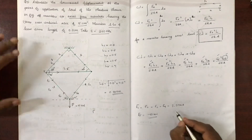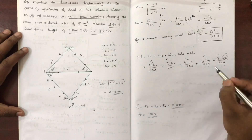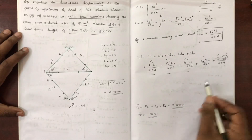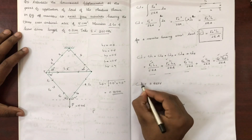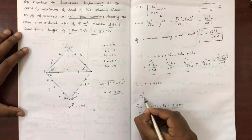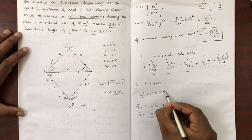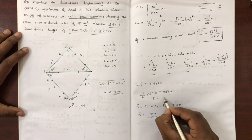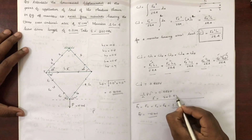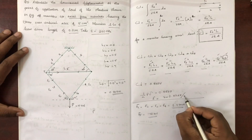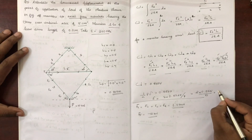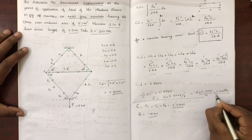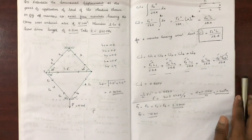F5 is minus 10 kN. Substituting all values — F1, F2, F3, F4, F5 — into the total strain energy expression gives U equals 0.8535. Using the relation half P delta equals 0.8535, delta equals 2 times 0.8535 divided by P. With P equal to 10, delta equals 1.707 times 10 to the minus 4 meters. This is the answer.